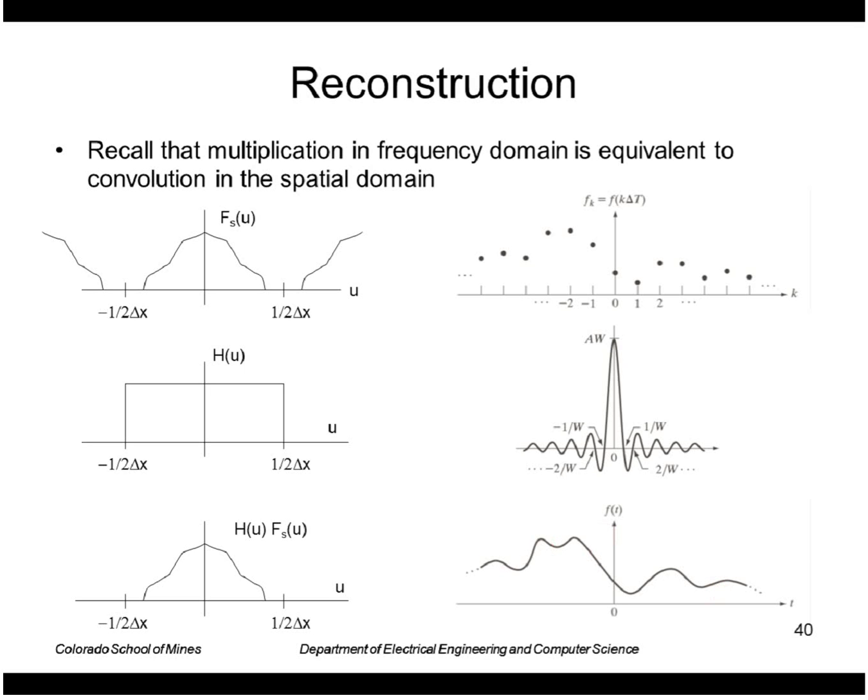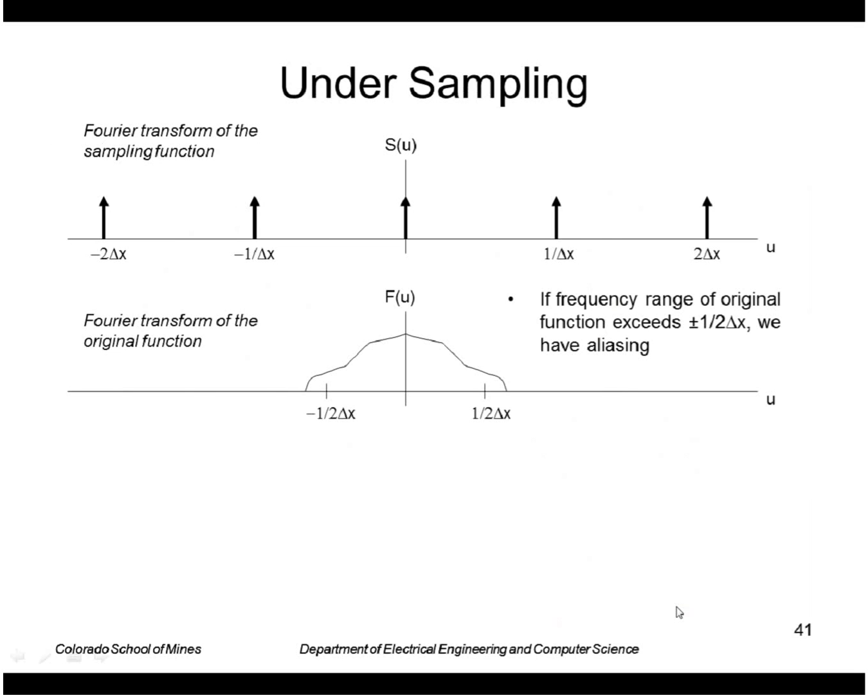Or we could have gone this way too. We could have just done an inverse Fourier transform on this to get our original function back. Now we can address what happens if you don't sample at a high enough rate.